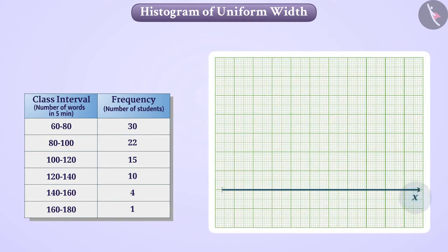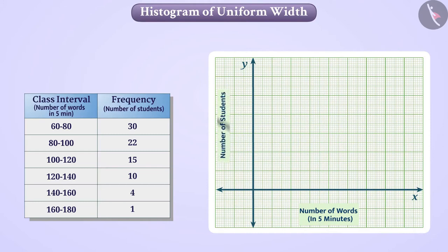First, draw the x-axis and y-axis on graph. On the x-axis, we will take the number of words typed in 5 minutes and the number of students on the y-axis. Here, class width, that is, class width of all class intervals is same, which is 20 words.